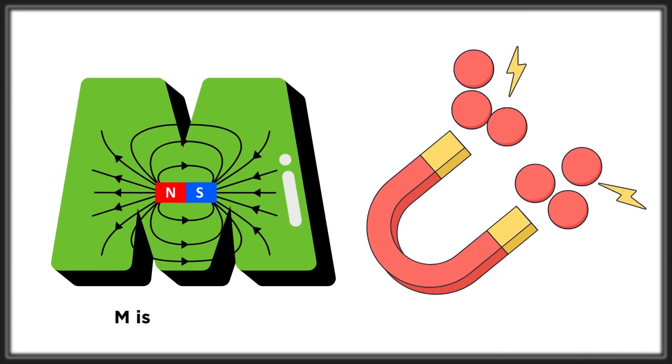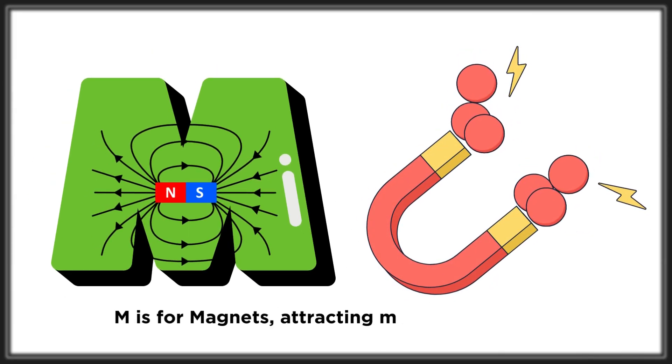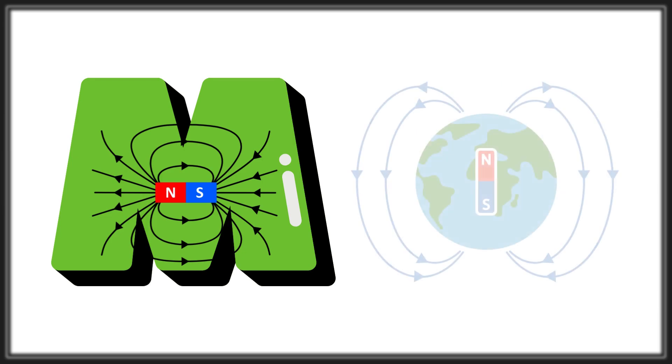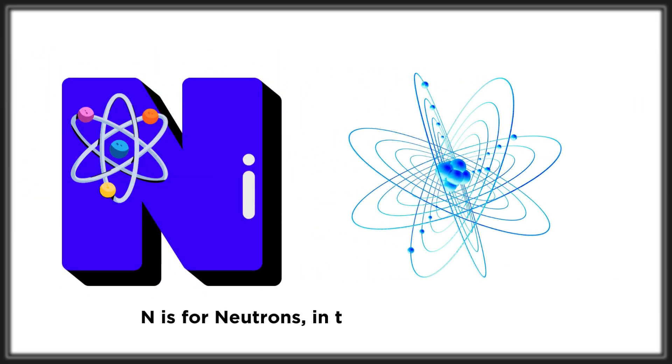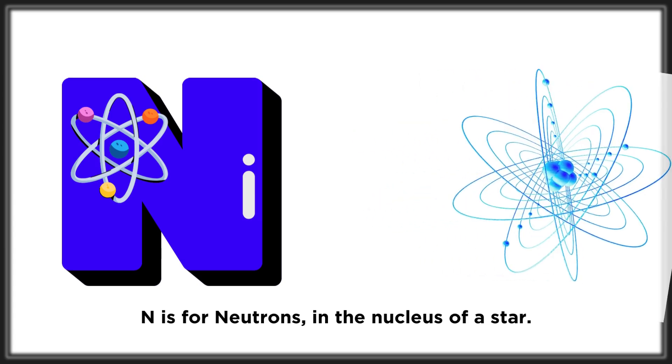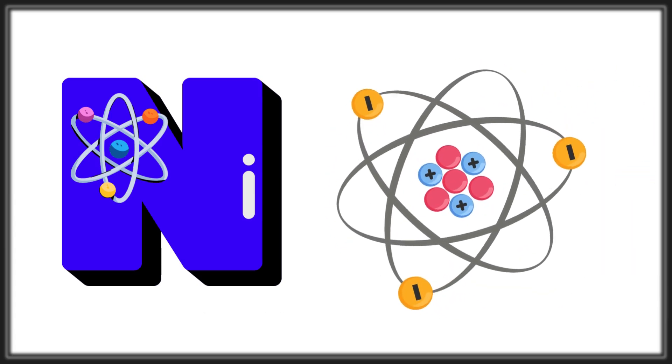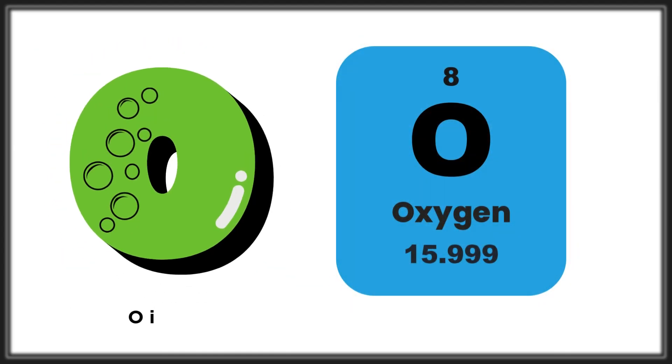M is for magnets, attracting metal near and far. N is for neutrons, in the nucleus of a star. O is for oxygen,